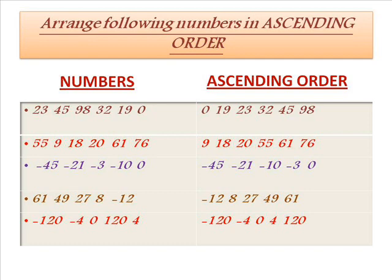Second example: 55, 9, 18, 20, 61, 76. These numbers can be arranged as 9, 18, 20, 55, 61, and 76. Third example: minus 45, minus 21, minus 3, minus 10, 0. These numbers can be arranged as minus 45, minus 21, minus 10, minus 3, and 0. Fourth example: 61, 49, 27, 8, minus 12. Order is: minus 12, 8, 27, 46, 61.